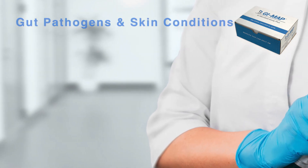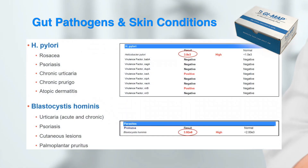Here are a few things I'm looking for on the report that I might connect with a skin condition. When we have gut pathogens, a couple I'm really focusing on are H. pylori and Blastocystis hominis. H. pylori is a bacteria that lives in the stomach. In the literature, this has been connected with rosacea, psoriasis, chronic urticaria, chronic prurigo, and atopic dermatitis.